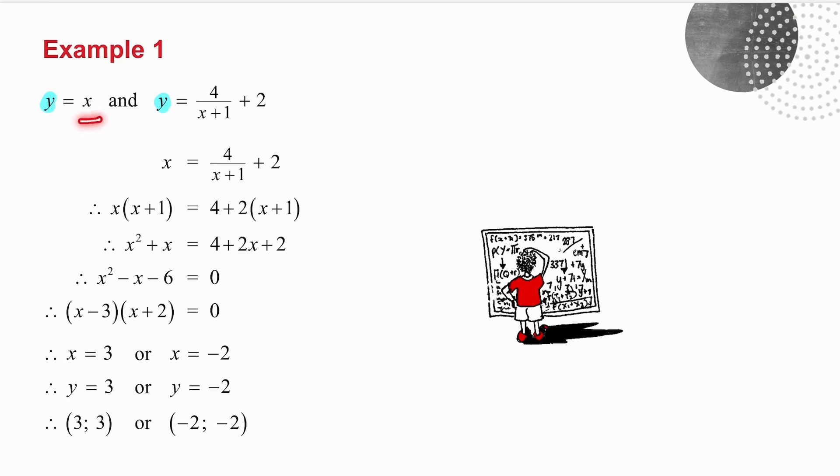I can make x equal to 4 over x plus 1 plus 2. My common denominator is x plus 1, so I multiply everything by x plus 1,